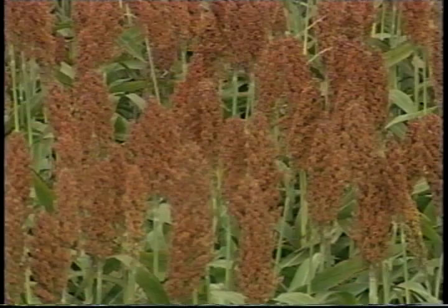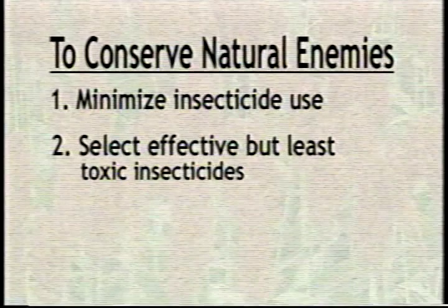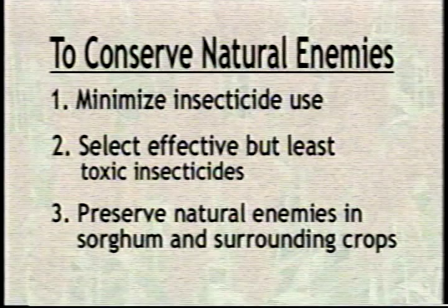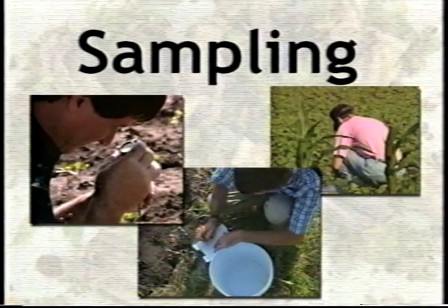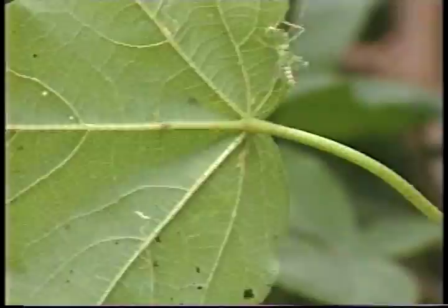Another important aspect of conservation is habitat surrounding cotton. Many important natural enemies like lady beetles, spiders, and pirate bugs found in cotton are also found in surrounding fields. Sorghum, for example, planted near cotton provides a source of natural enemies. Use of insecticides only when necessary in sorghum can preserve this source of natural enemies. Scouting the field to find out how many natural enemies are present can help farmers make better pest management decisions.